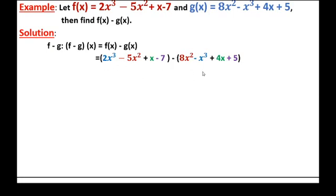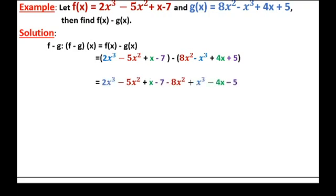The first thing to do is distribute the negative sign into all terms of the second polynomial function in the bracket. So minus 8x squared plus x to the power of 3 plus 4x plus 5 becomes: 2x to the power of 3 minus 5x squared plus x minus 7, and the second polynomial becomes minus 8x squared plus x to the power of 3 minus 4x minus 5.